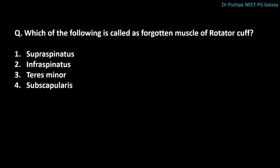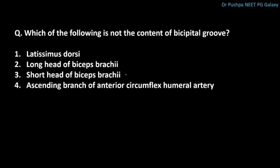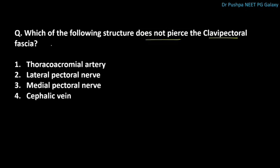Which of the following is called the forgotten muscle of the rotator cuff? The correct answer is subscapularis. The other muscles are attached to the greater tubercle, whereas subscapularis is attached to the lesser tubercle. Which of the following is not a content of the bicipital groove? The correct answer is the short head of biceps brachii. The lateral lip of the bicipital groove gives attachment to pectoralis major, whereas teres major is attached to the medial lip.